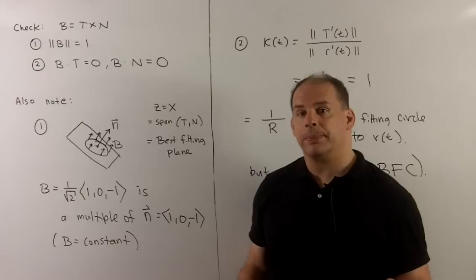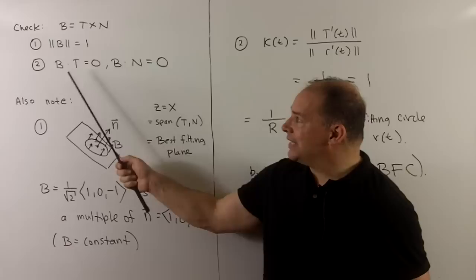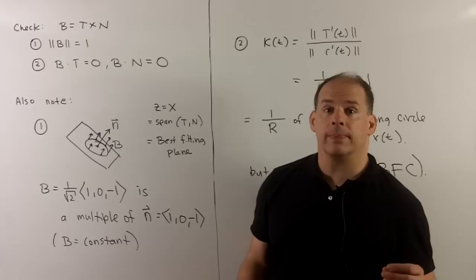Again, if we're checking things, we note the binormal has length one, and the binormal is orthogonal to both T and N. So these three vector functions are mutually orthogonal, so they make a frame.